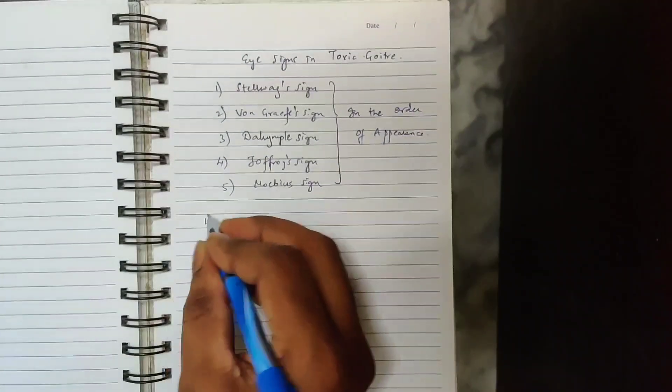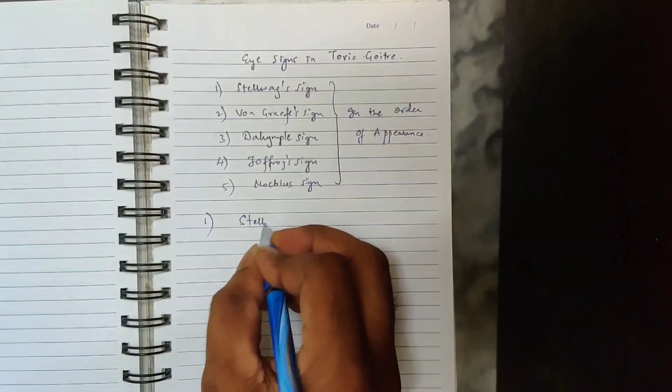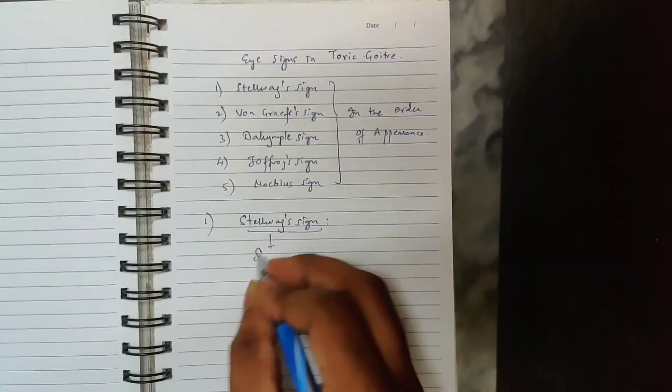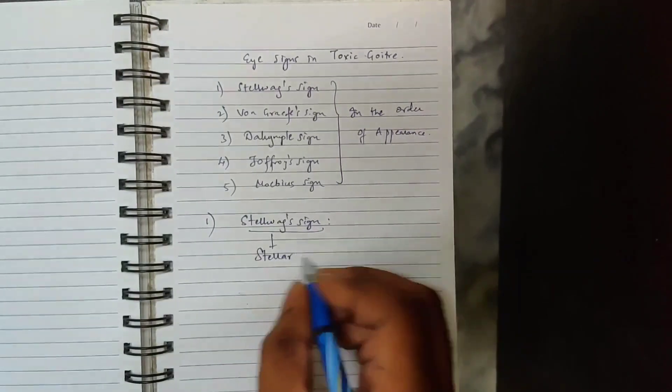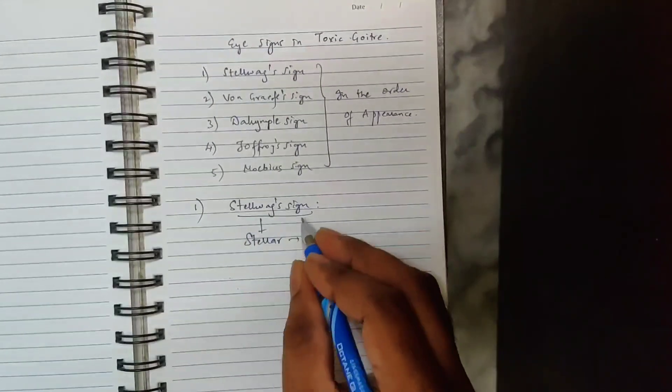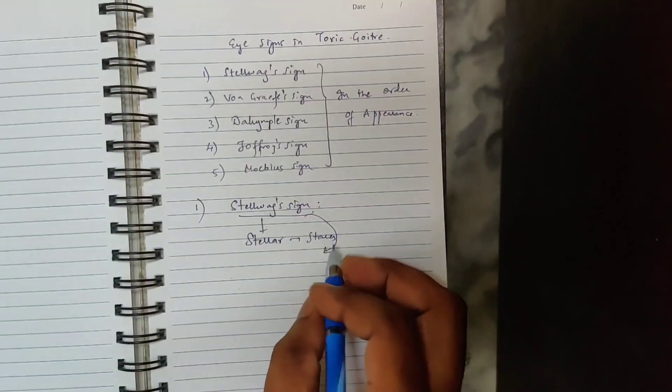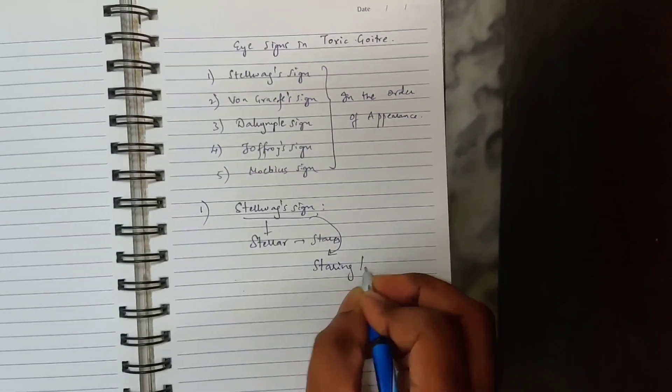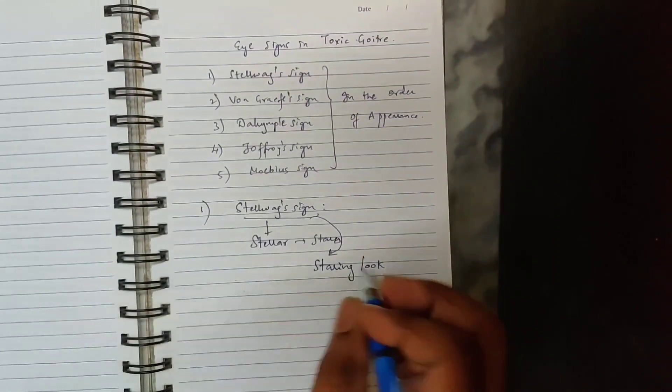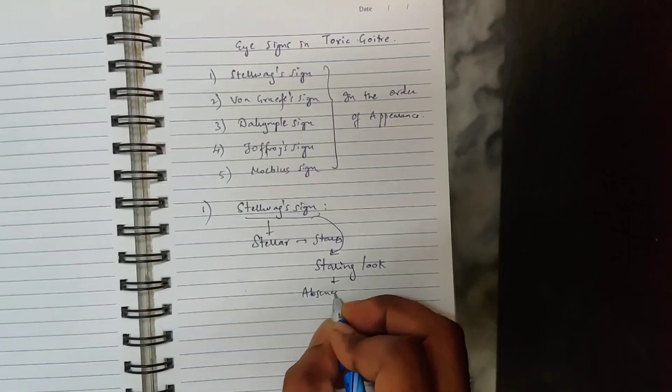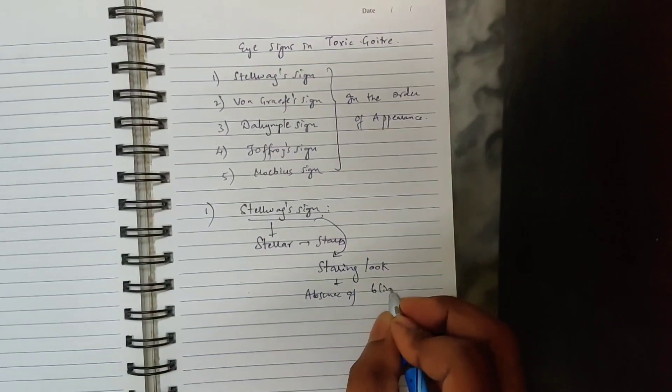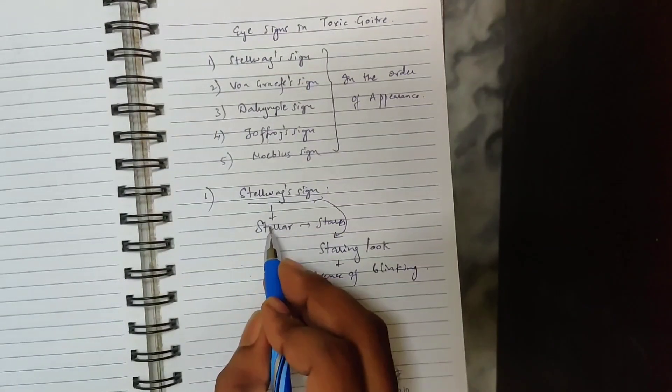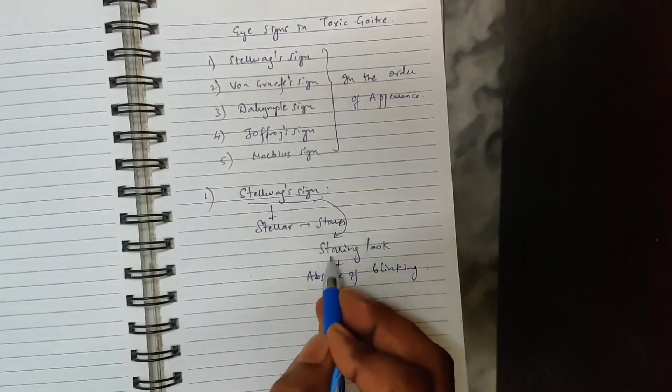So firstly, Stelwag sign. Basically, stellar is used to describe stars, so Stelwag sign is staring look, which is indeed absence of normal blinking. Remember, stellar describes stars and staring look.